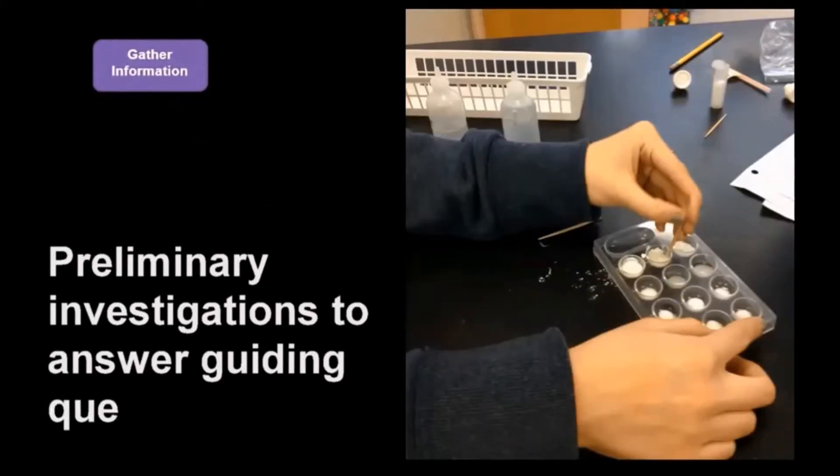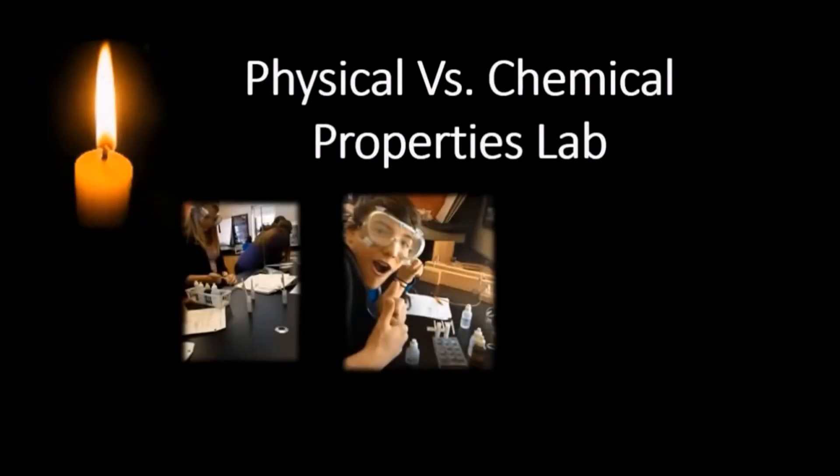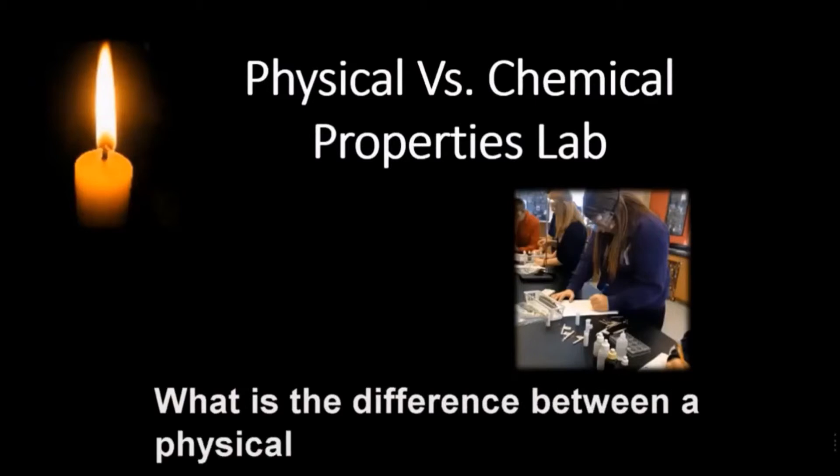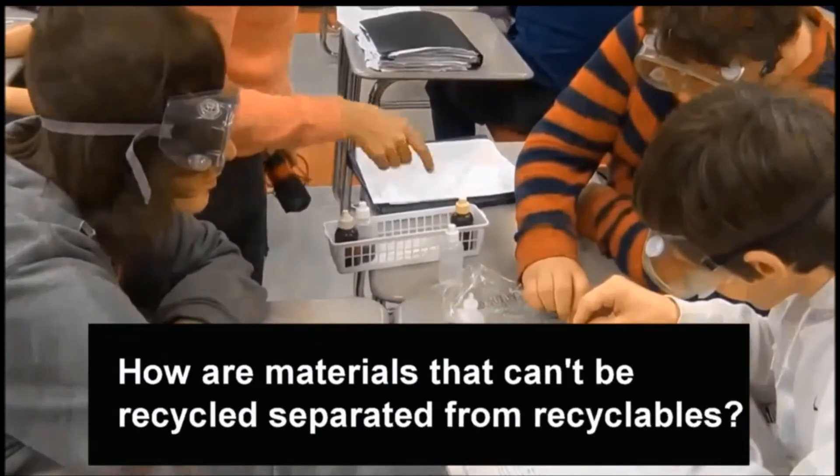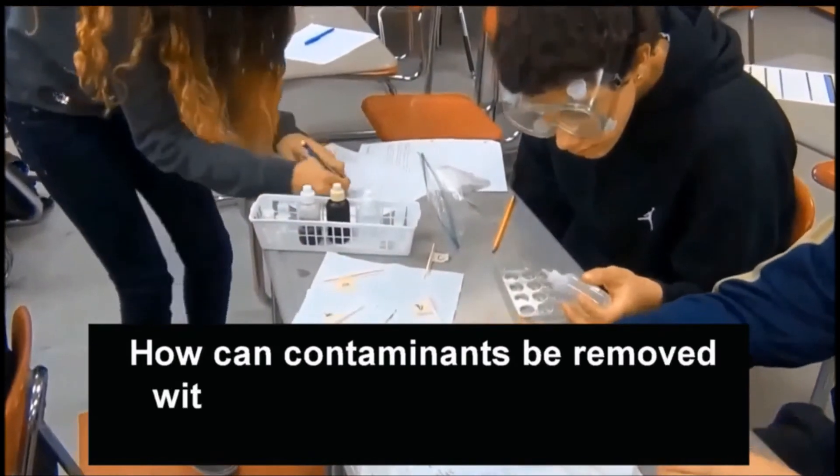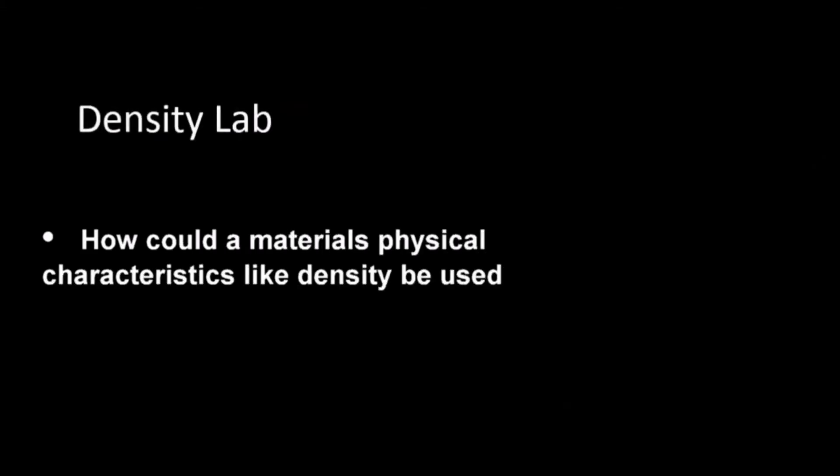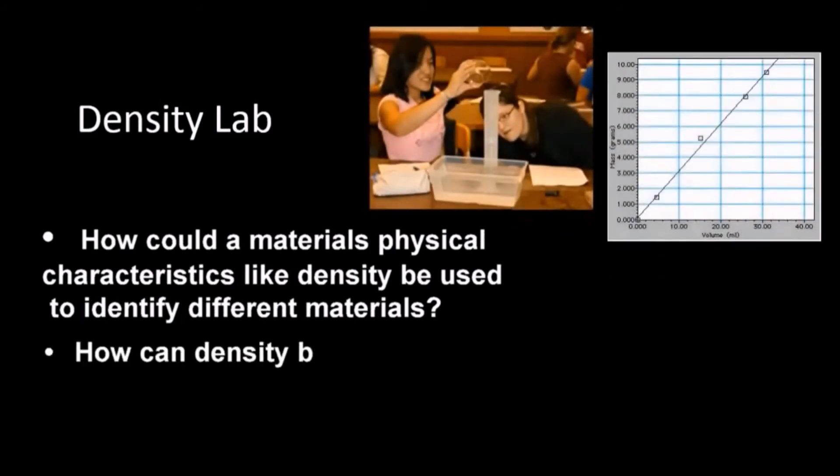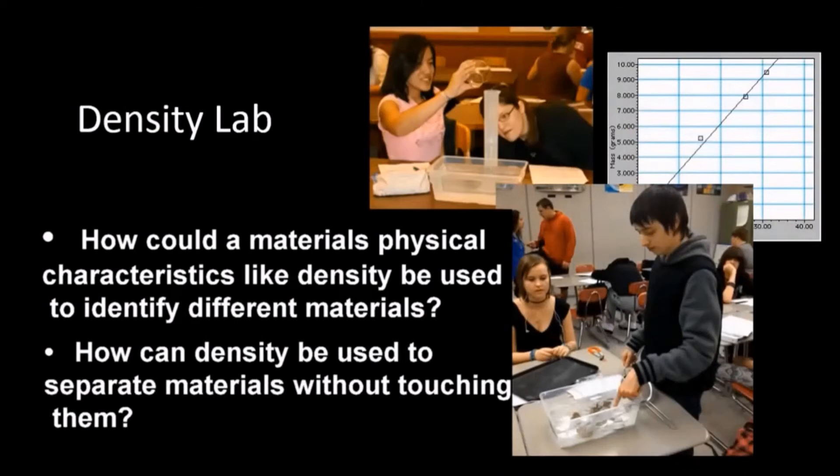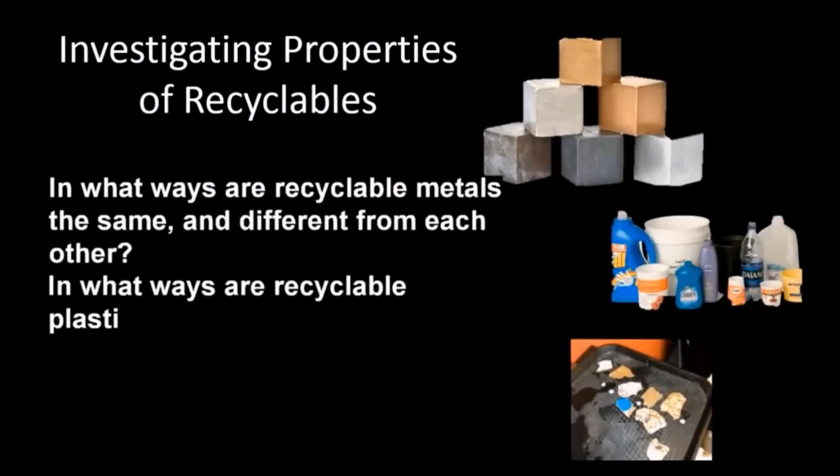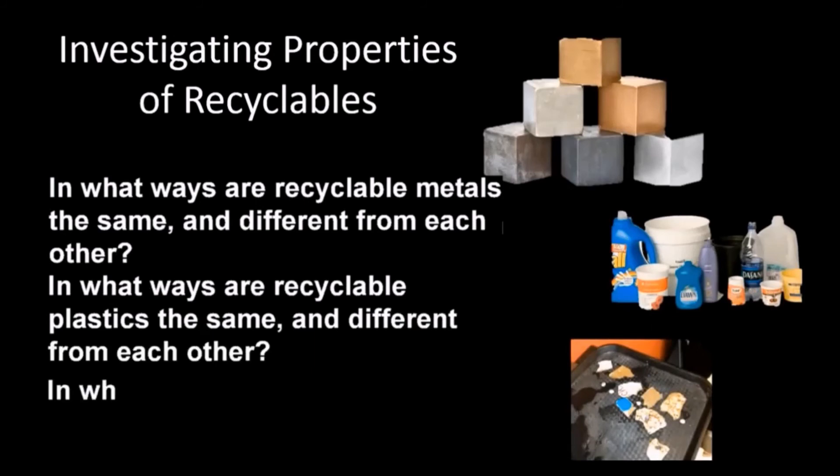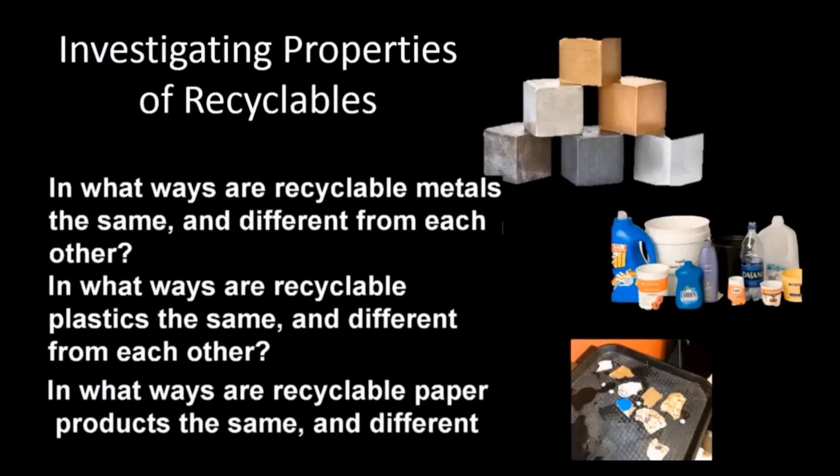Preliminary investigations to answer guiding questions. Physical versus chemical properties lab. What is the difference between a physical and a chemical property? Can anything about a material be changed without a chemical change occurring? How are materials that can't be recycled separated from recyclables? How can contaminants be removed without changing the recyclable materials? How could a material's physical characteristics like density be used to identify different materials? Can density be used to separate materials without touching them? In what ways are recyclable metals the same and different from each other? In what ways are recyclable plastics the same and different from each other? In what ways are recyclable paper products the same and different from each other?